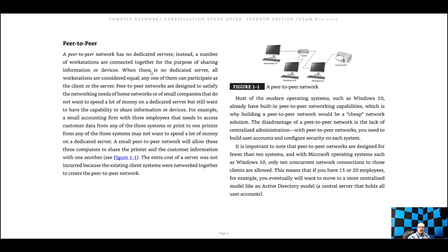In peer-to-peer, there's no dedicated server — instead, a number of workstations are all connected for the purpose of sharing information or devices. The drawback is that if one of the machines is off, you won't be able to access that machine or the files on it. The advantage is basically that you avoid the cost of a server. You'd find this in very small organizations.